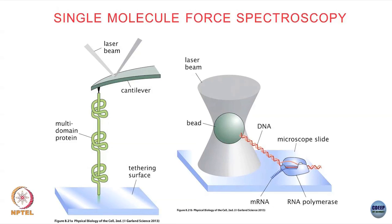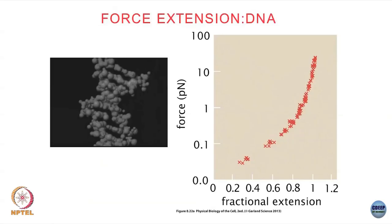What you get is something that looks linear at least in the initial part, but then of course it deviates because that approximation only holds for very small extensions. If you look at DNA for example, you pull it using an AFM tip or an optical trap and you see a force versus extension curve. Initially for very small extensions it grows linearly, but since you cannot stretch the polymer indefinitely — the extension must be less than or equal to the total contour length — the curve becomes more and more non-linear as you apply more and more force.